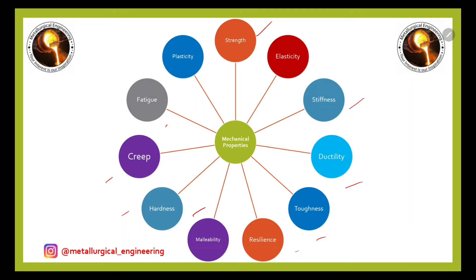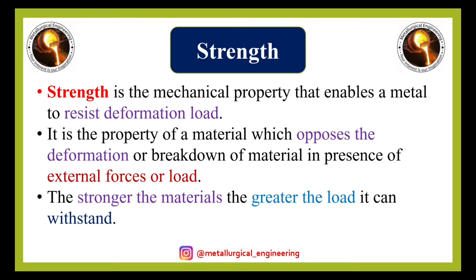These are the main mechanical properties of any material. First, we understand the very important mechanical property: strength. Strength is something which enables a metal to resist permanent mechanical deformation under load. This mechanical property opposes the deformation or breakdown of any material in the presence of external forces or load. A material is considered stronger if it can take a much greater amount of load compared to another material.